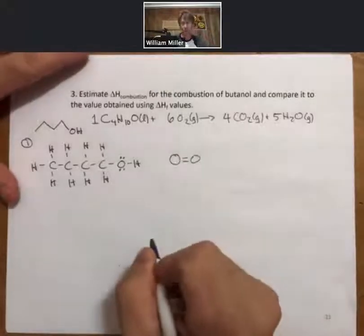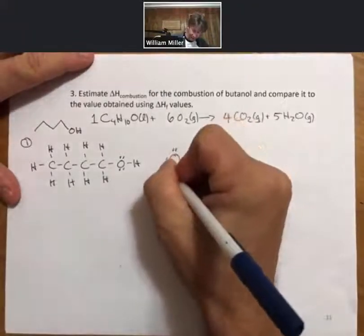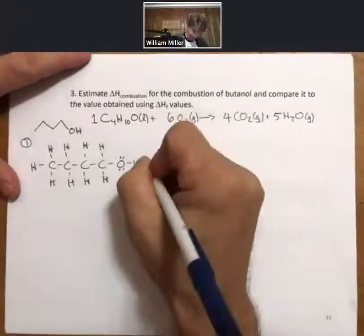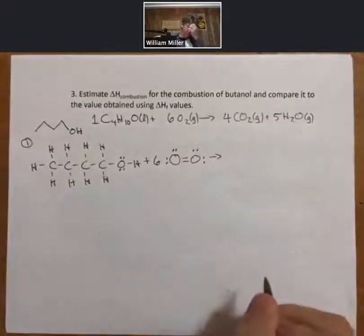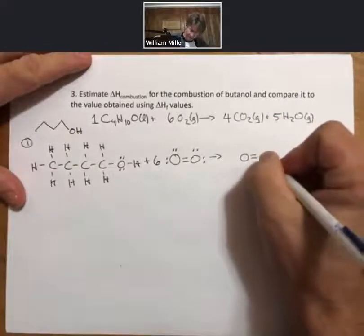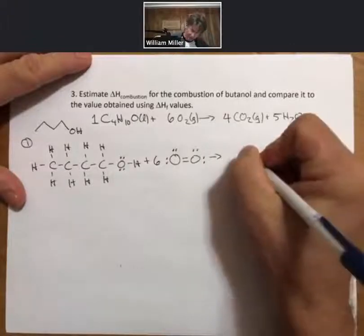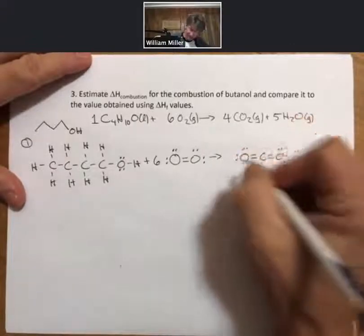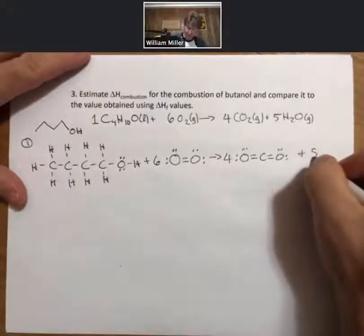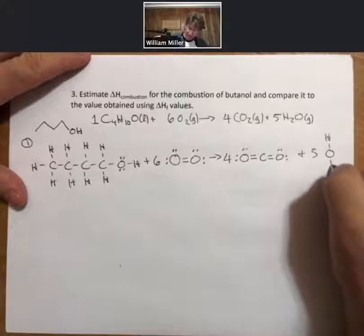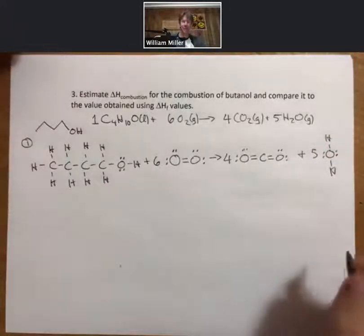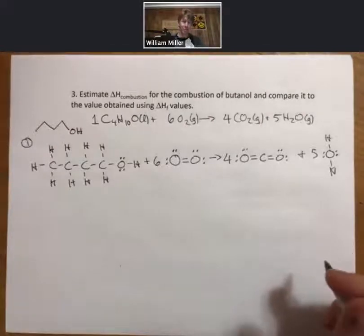Oxygen's Lewis structure O2 has a double bond in it, plus six goes to four carbon dioxides. Carbon dioxide has two double bonds in it, and we'll put four there. And then plus five H2Os. I'll draw my H2O vertically there so it fits in, because I always seem to be running out of space on this side. Now I have Lewis structures for everything.